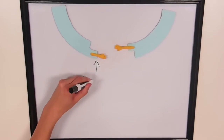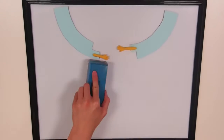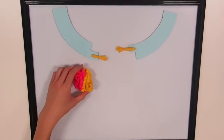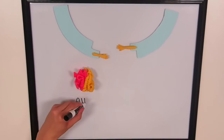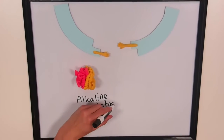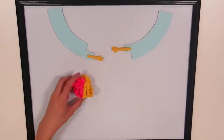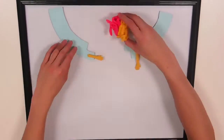Before ligation, the sticky-ended fragments must be prepared to prevent self-annealing. This is done through the use of alkaline phosphatases that dephosphorylate the plasmid ends.